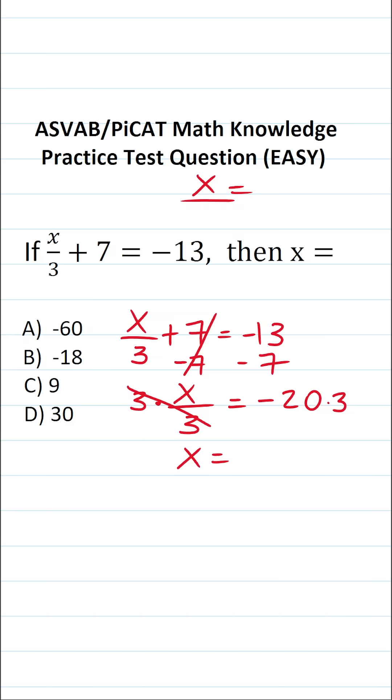A negative times a positive is going to be a negative. More specifically negative 20 times positive 3 is negative 60. So the answer to this one is A, negative 60.